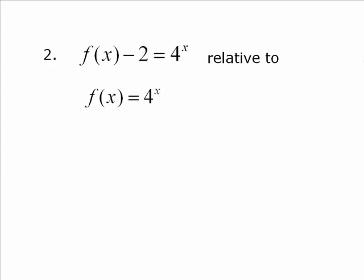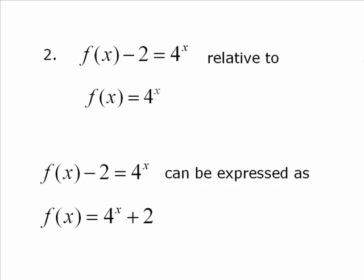Number 2, f(x - 2) = 4^x relative to f(x) = 4^x. These are exponential functions. A base and then the exponent has the variable x in it. And you notice that we do not have the y isolated. So your choice is to do this. Bring that 2 over to the other side. So you get f(x) = 4^x + 2.